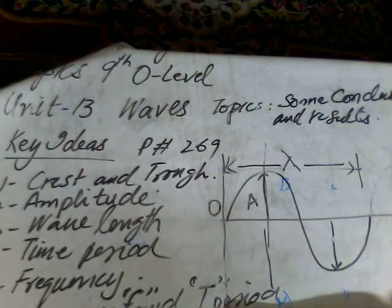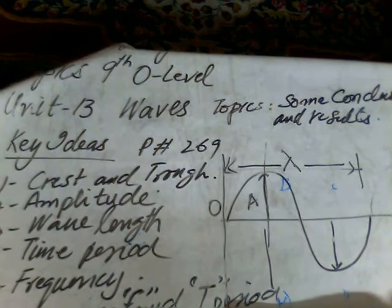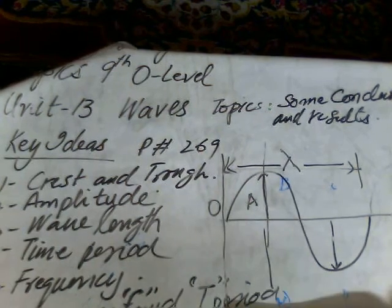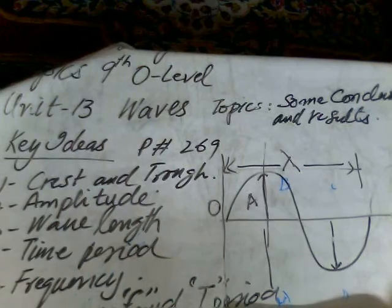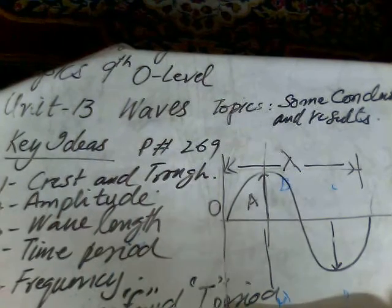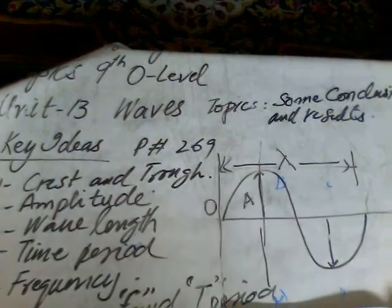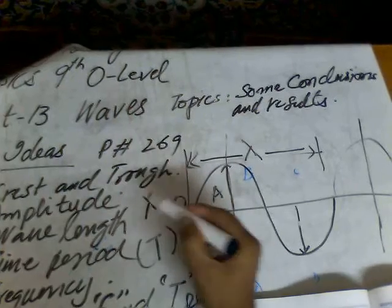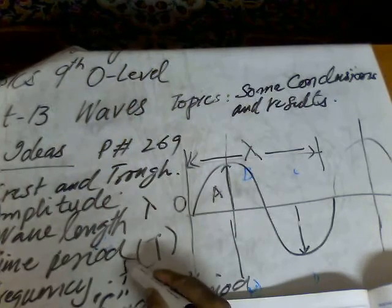Frequency and time period. Frequency and time period are reciprocal to each other. Suppose f is equal to one over T. T is a symbol for the time period.